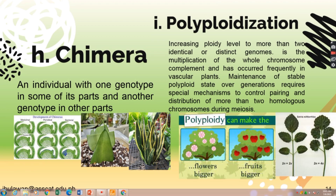Polyploidy can make flowers and fruits bigger. For example, when the natural state is 2n equals 2x, after polyploidization the chromosome number becomes 4x. This changes the genotypic and phenotypic characteristics of certain plants. Because of polyploidization, it will also increase the yield of harvested fruits from different trees.